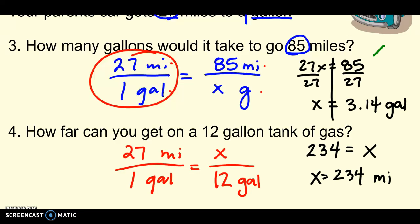Okay. So, I just finished showing the work for my cross products. And, I got this. We got an answer of, since I was solving here for gallons, 3.14 gallons. Or, in the next one, I got 234. But, I was searching for how many miles I could go. 234 miles. Okay.